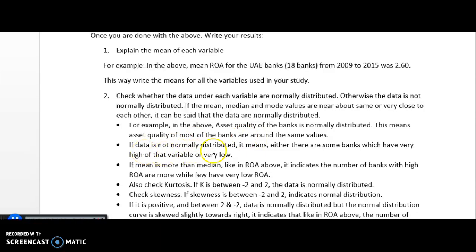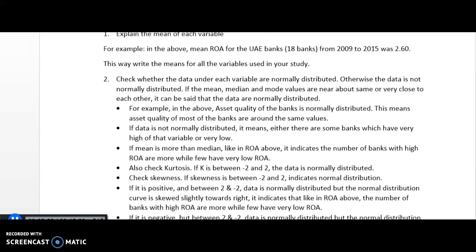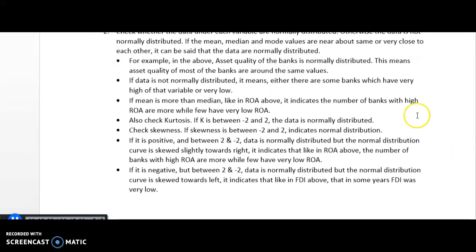If the data is not normally distributed, it means either some banks have very high or very low values of that particular variable. For example, with ROA, some banks may have very high ROA and some very low, so mean, median, and mode will not be close. If the mean is more than the median — as in ROA — it indicates the number of banks with high ROA is more, while very few banks have very low ROA.